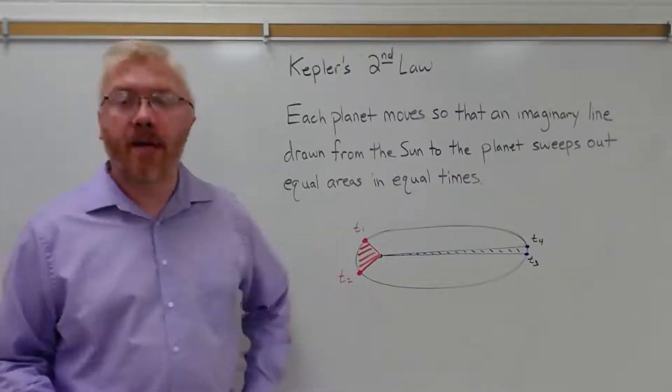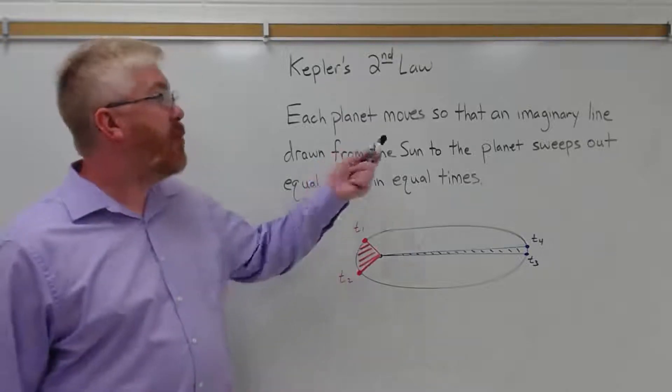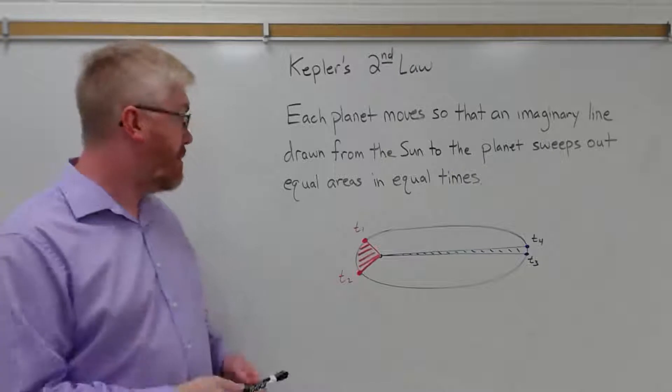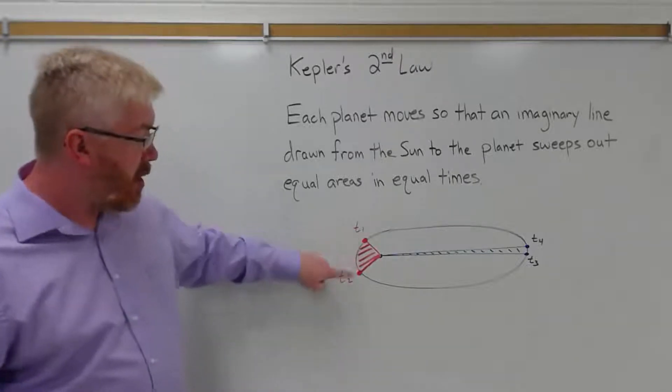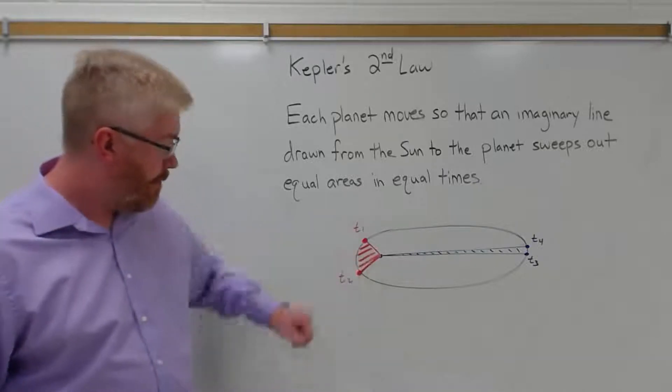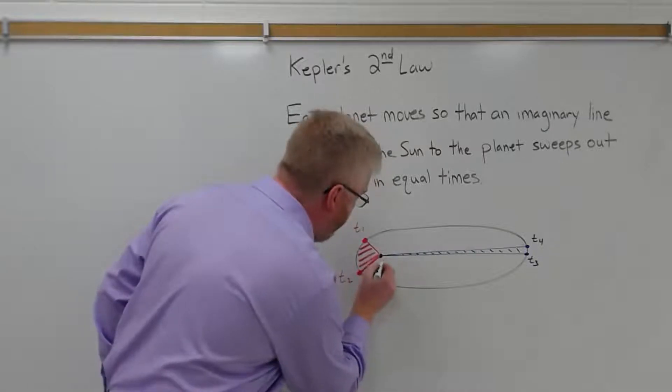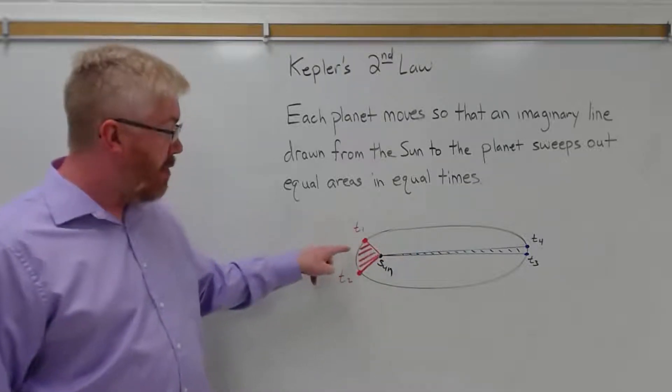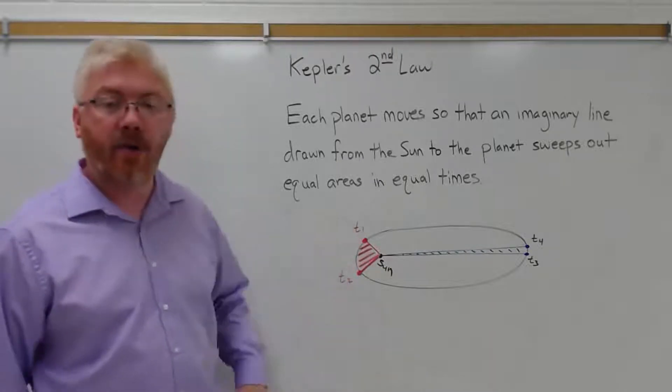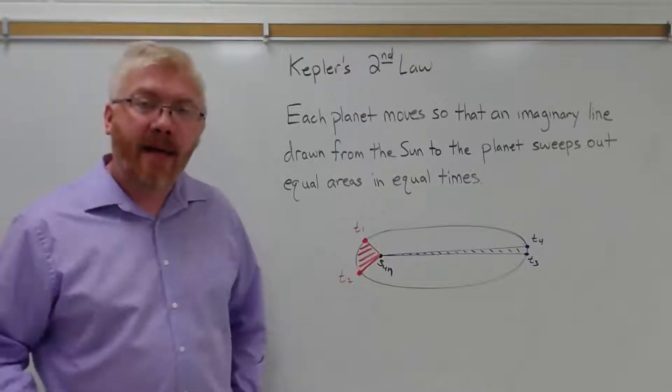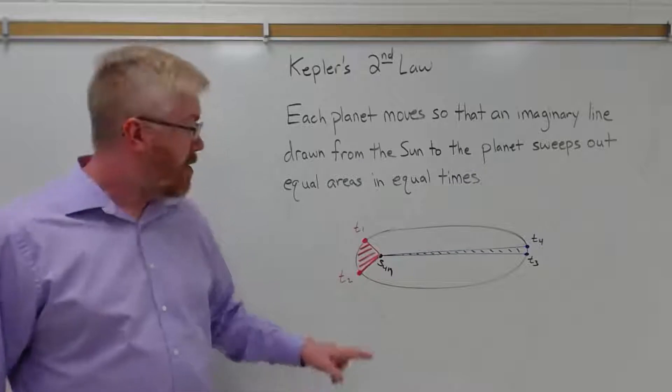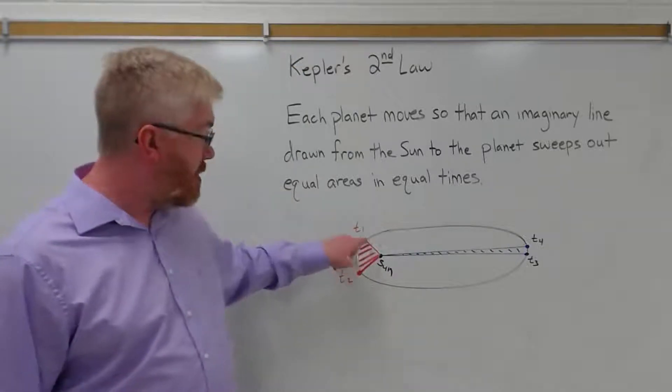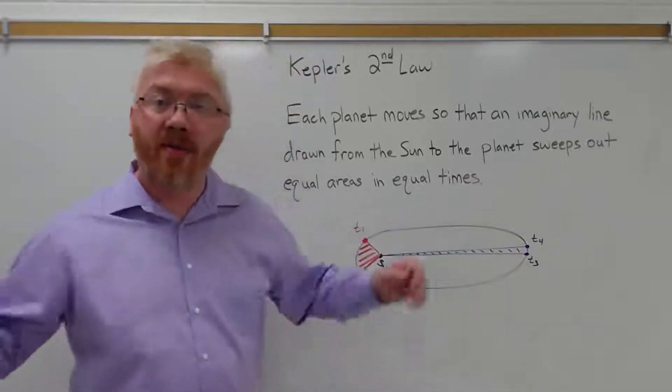Kepler's second law of planetary motion is often called the Equal Areas Law. It states that each planet moves so that an imaginary line connecting the Sun and the planet sweeps out equal areas in equal times. So for example, a planet moving from 0.1 to 0.2, imagine here's the Sun. Imagine a line connecting the Sun to the planet at time T1. That planet moves in its orbit to T2. It sweeps out the area here shown in red. That area has to remain the same for the same time interval. So for example, the blue area here is actually the same amount of area as the red area. This triangle is short and fat, this triangle is tall and thin, but they have the same area.